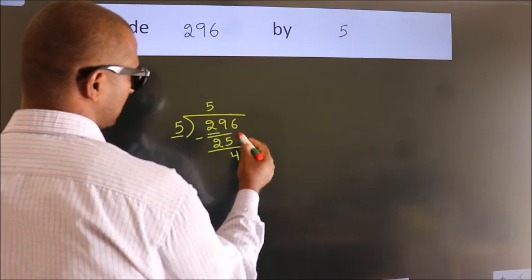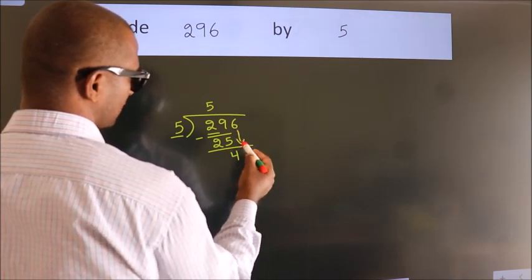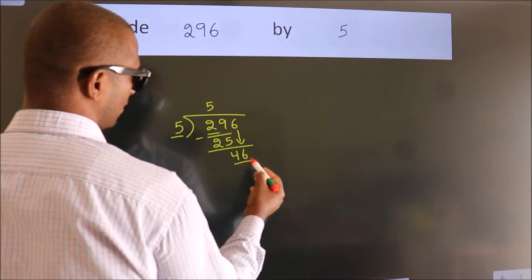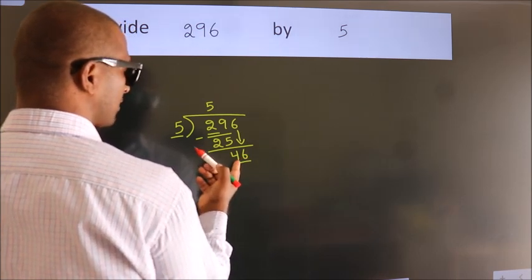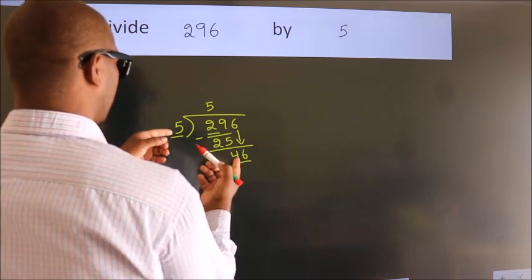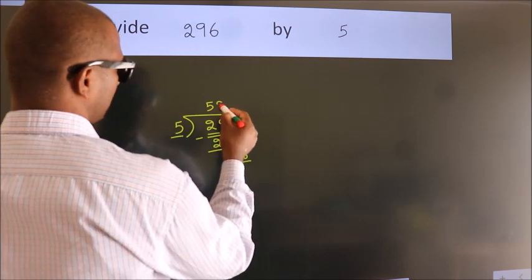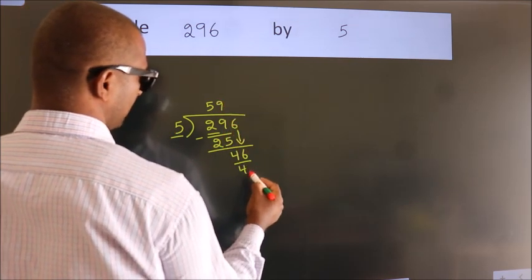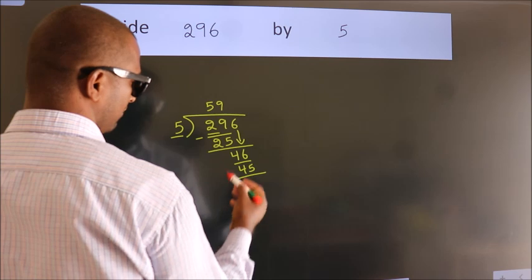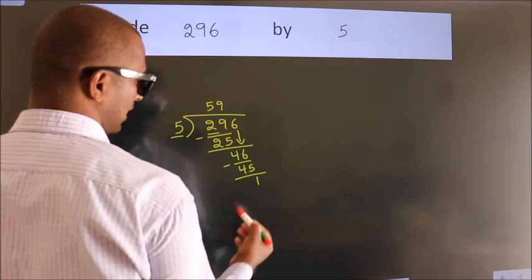After this, bring down the beside number. So 6 down. So 46. A number close to 46 in the 5 table is 5 nines 45. Now we subtract. We get 1.